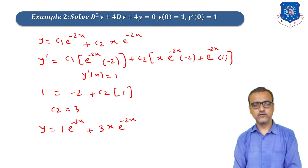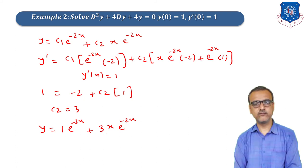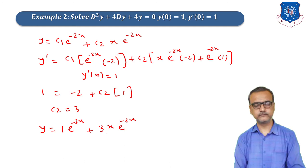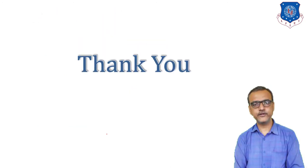In today's lecture we have seen the solution of higher-order homogeneous linear ordinary differential equations with constant coefficients. We discussed Case 1 (real and distinct roots) and Case 2 (real and repeated roots), and we saw what is a general solution and what is a particular solution. In the next lecture we will see Case 3 and Case 4. Thank you for watching this video.